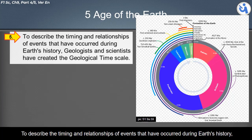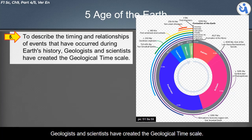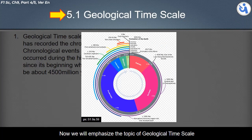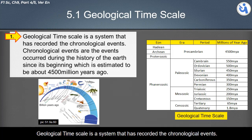To describe the timing and relationships of events that have occurred during earth's history, geologists and scientists have created the geological time scale. The geological time scale is a system that has recorded the chronological events — that is, events that occurred during the history of the earth.